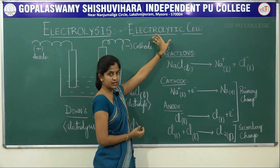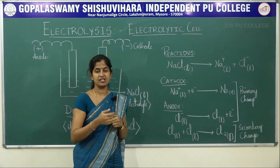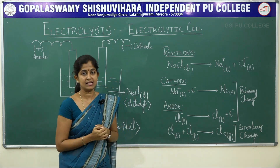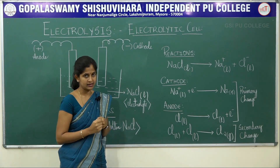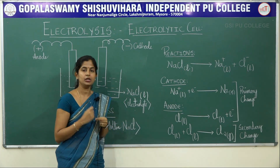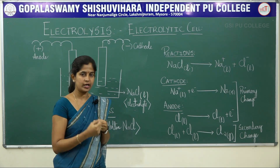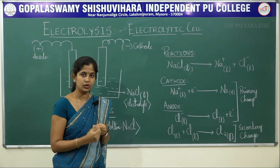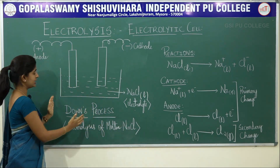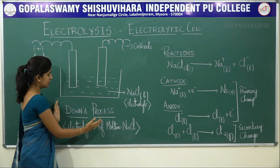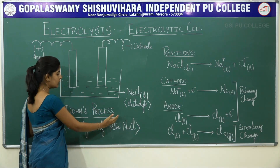You have already studied about the electrolytic cell in your first year — specifically the Castner-Kellner cell, which is also an electrolytic cell. Using electrical energy, you make a non-spontaneous redox reaction happen. Today we are going to study a different cell — one which involves a process called the Down's Process.